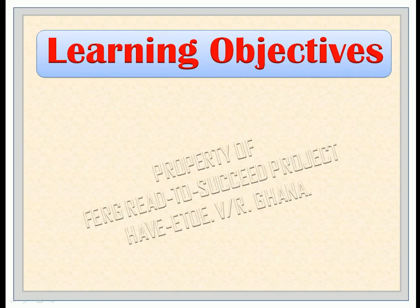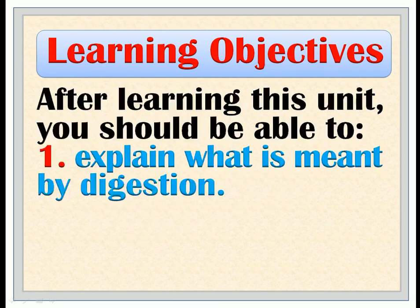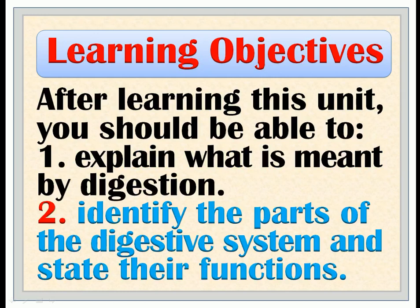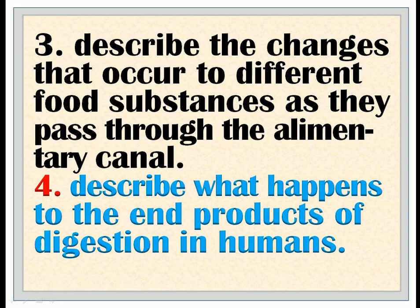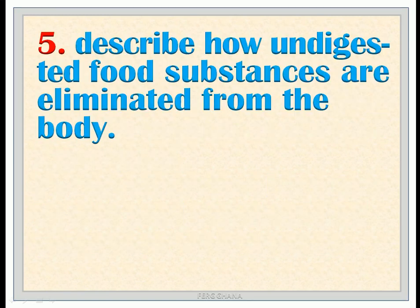Learning Objectives. After learning this unit, you should be able to: 1) explain what is meant by digestion; 2) identify the parts of the digestive system and state their functions; 3) describe the changes that occur to different food substances as they pass through the alimentary canal; 4) describe what happens to the end products of digestion in humans; 5) describe how undigested food substances are eliminated from the body.